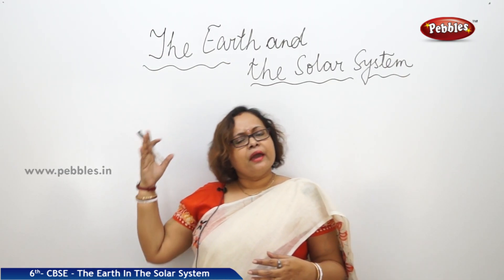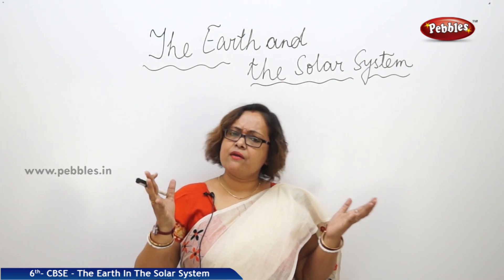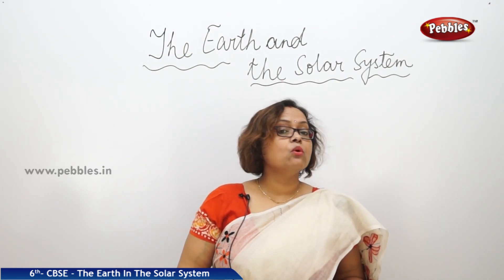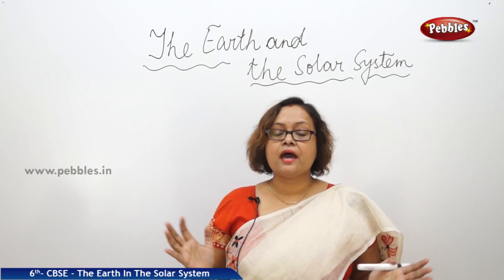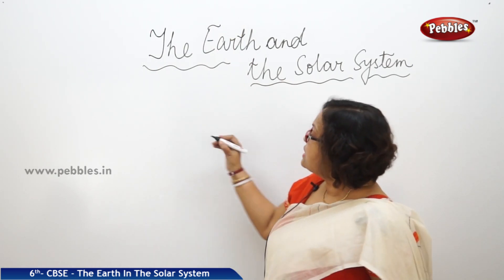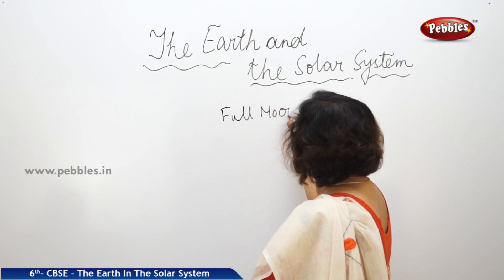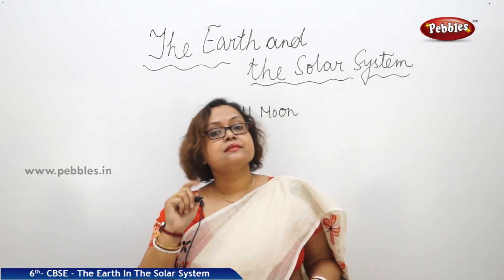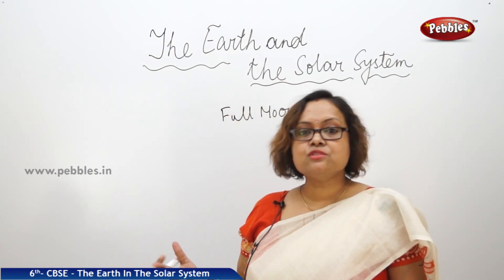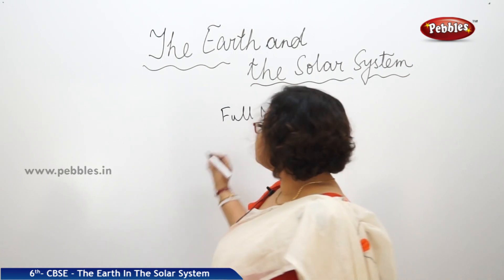Now, can we see the moon in the same shape and size every night? No, it is not. You all also know that. Some days we can see the moon in full size and we call it full moon. Then there are some few nights when we can see that the moon has disappeared — there is no moon at all. Those nights we call them new moon.